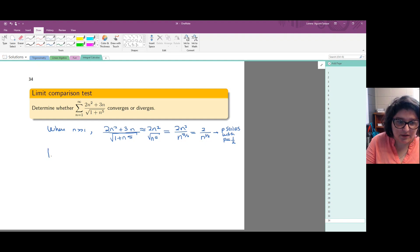So notice that the limit as n goes to infinity of our term, 2n squared plus 3n over the square root of 1 plus n to the 5, over 2 over n to the 1 half, is actually 1. This limit can be found by playing with powers of n. We're not going to do that in this video, but if you have questions we can cover your questions.